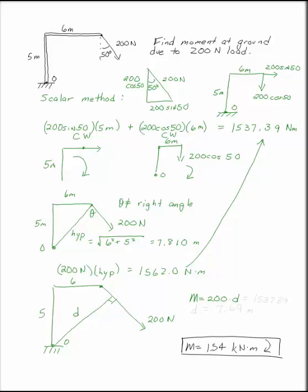This gives you a way to find out what that D is. This still has to be 1,537.39 newton meters, so you can say that D must be 7.69 meters, which is not what we got as the hypotenuse of this triangle.